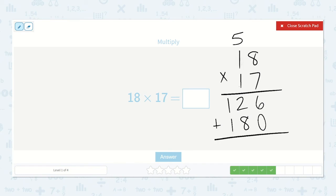So let's add those together. 6 plus 0 is 6. 2 plus 8 is 10, so let's carry the 1. 1 plus 1 plus 1 plus 1 is 3. Our answer is 306.